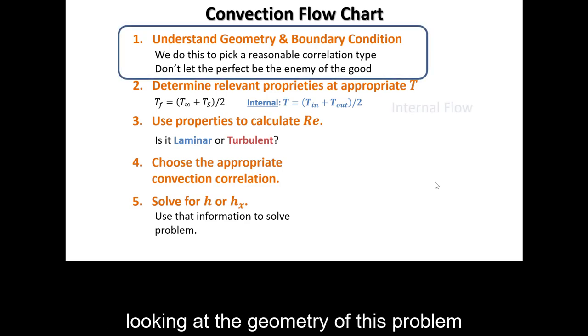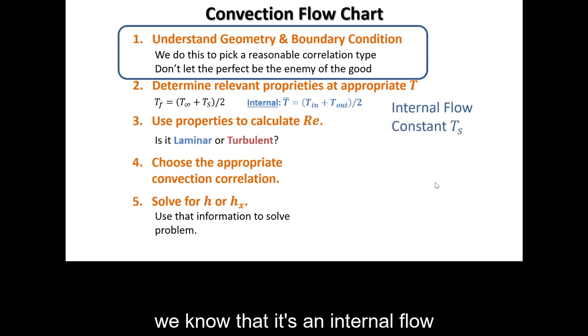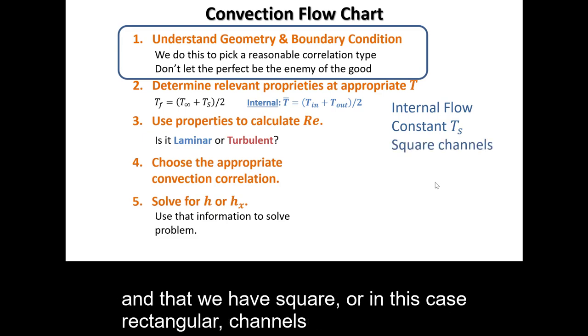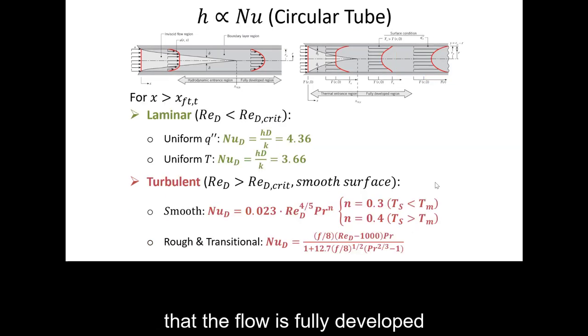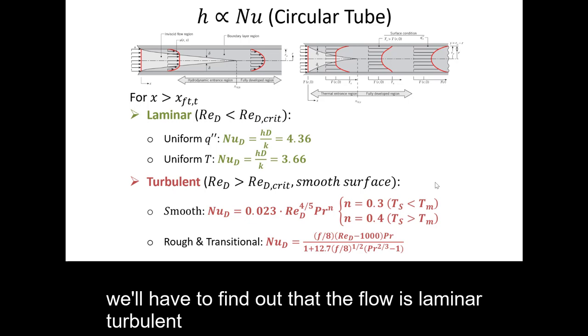Looking at the geometry of this problem, we know that it's an internal flow, that we have constant surface temperature, and that we have square, or in this case rectangular, channels. We'll need to look at the entrance lengths, although the problem says we can assume that the flow is fully developed, and we have four Nusselt number correlations to choose from. We'll have to find out if the flow is laminar or turbulent.